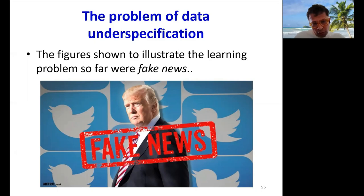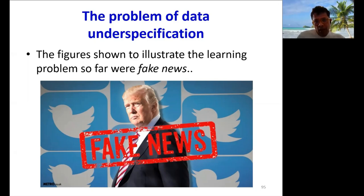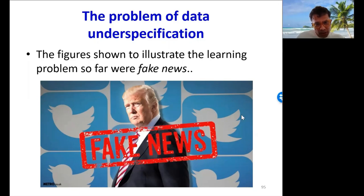Welcome to part two of lecture eight. So far in this lecture we've seen what makes a good divergence function and we've looked at batch norm as a way of improving model learning. Another very important problem in training neural network models is that of data underspecification, and the illustrations shown so far have presented somewhat of an unrealistically optimistic picture.